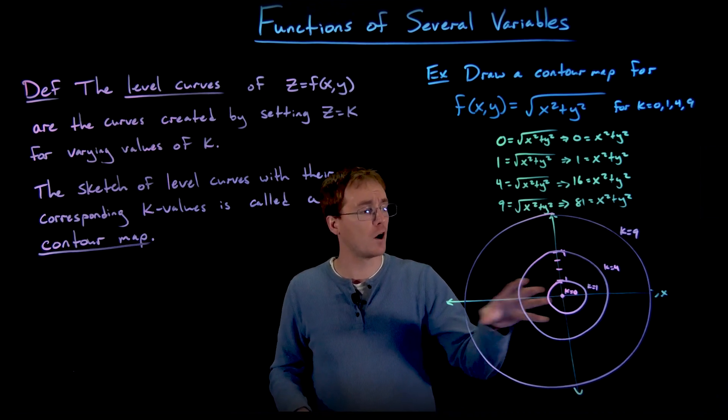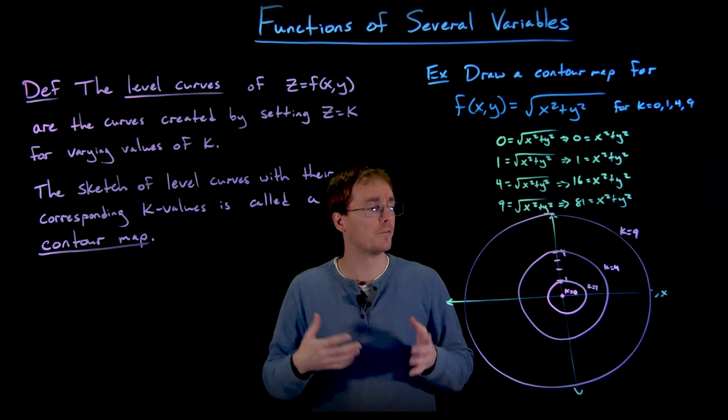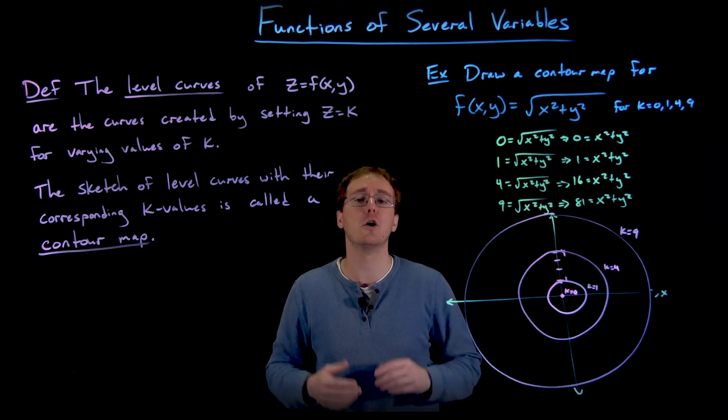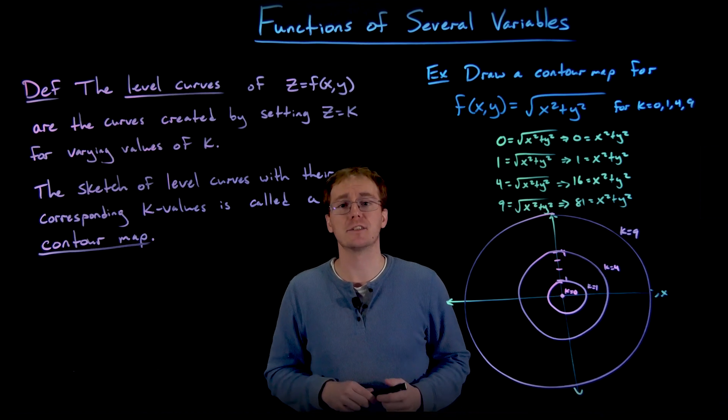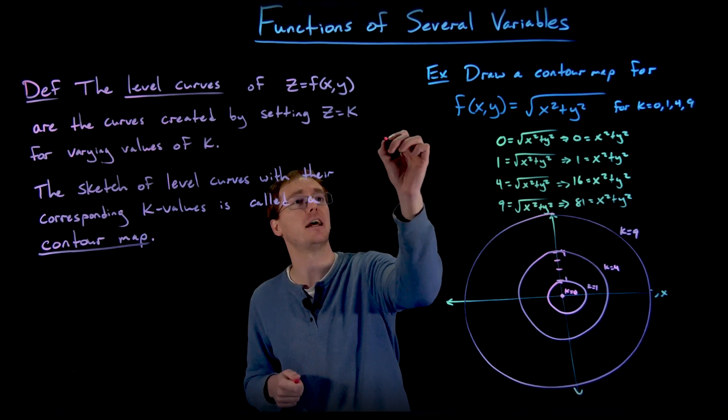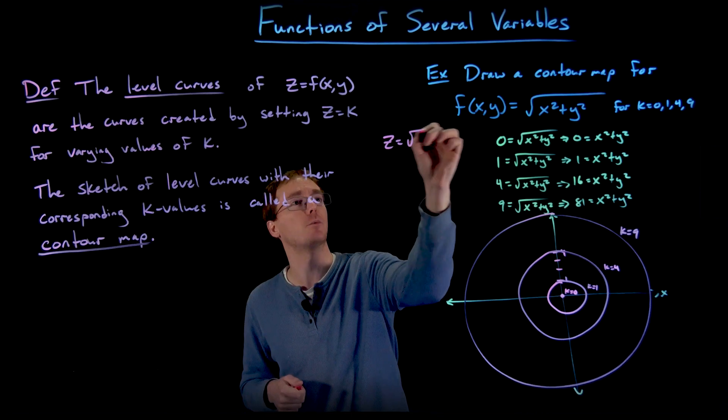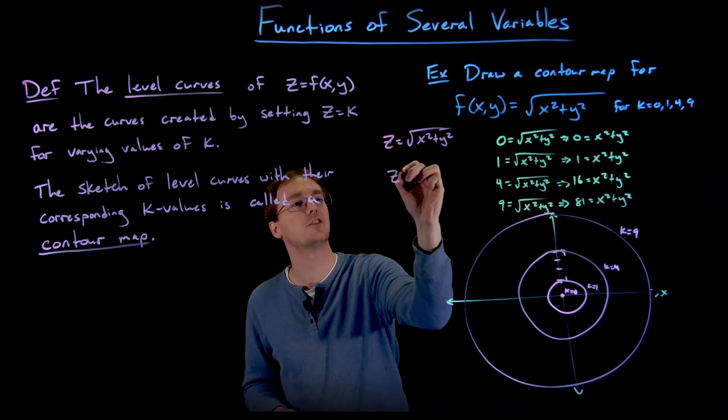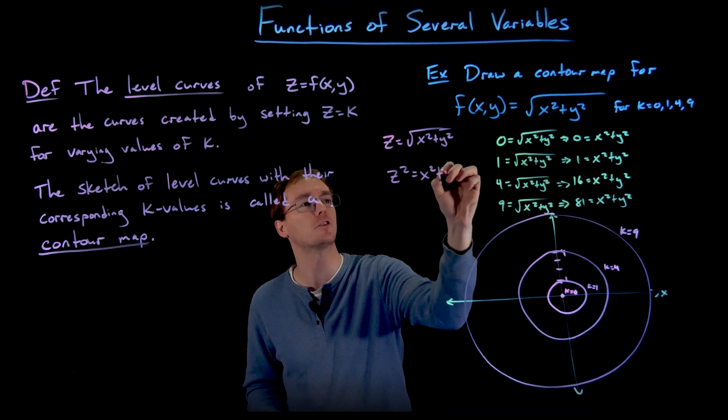And what that creates is a cone. And so from this contour map, we can visualize that this three-dimensional surface is going to represent a cone. We could look at some more vertical traces to help us verify that. Or we could take our equation and rewrite it as z = √(x² + y²) or z² = x² + y².